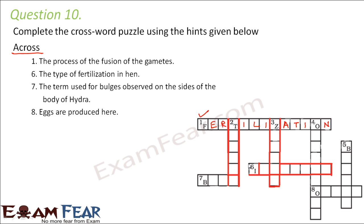Number six across: the type of fertilization in a hen. Hens lay eggs, but those eggs are formed inside their body, so the fusion between the gametes takes place inside the body. Therefore the answer is internal fertilization.